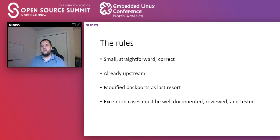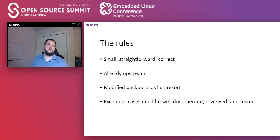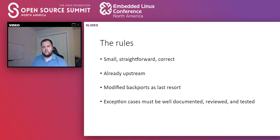When we backport commits, we very rarely modify them. Because of the rule that the patch has to be already upstream, if we modify a patch, it's no longer upstream — it's just our version of the patch. It's also important not to modify patches because we want to rely on the testing being done upstream. We would often rather take a series of patches that are already upstream than modify a patch just to make it apply. It also means that in the future, patches will apply without conflicts.